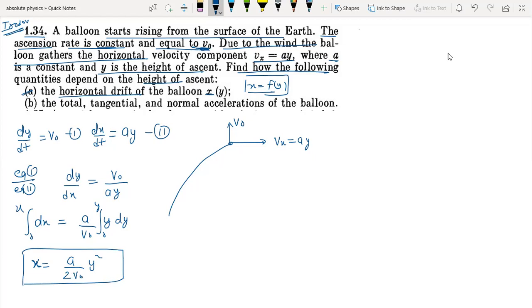Now let's move to second part. Part b asks for total, tangential and normal acceleration. Let's find the total acceleration. If we find ax in the x direction, that is equal to dvx by dt. vx is given as ay.